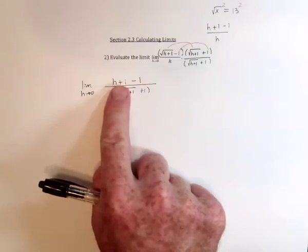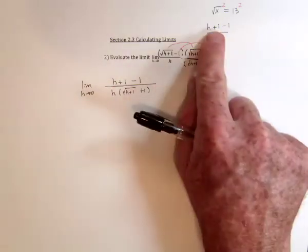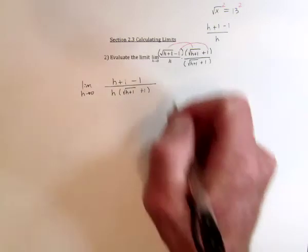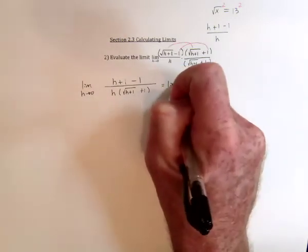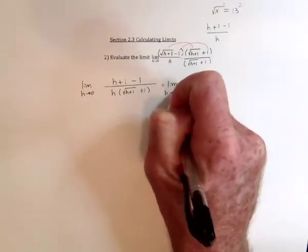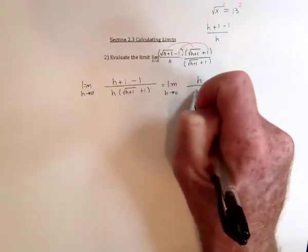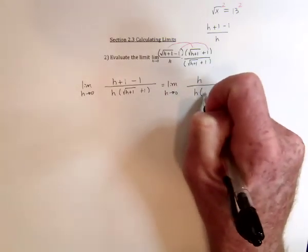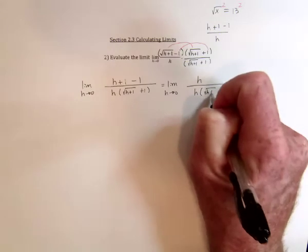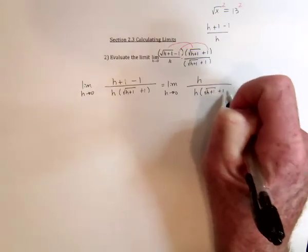And then this turned out exactly as I had wanted. Get rid of the radical. Now the ones can cancel, leaving just the h in the denominator. Leave it as it is for one more step.